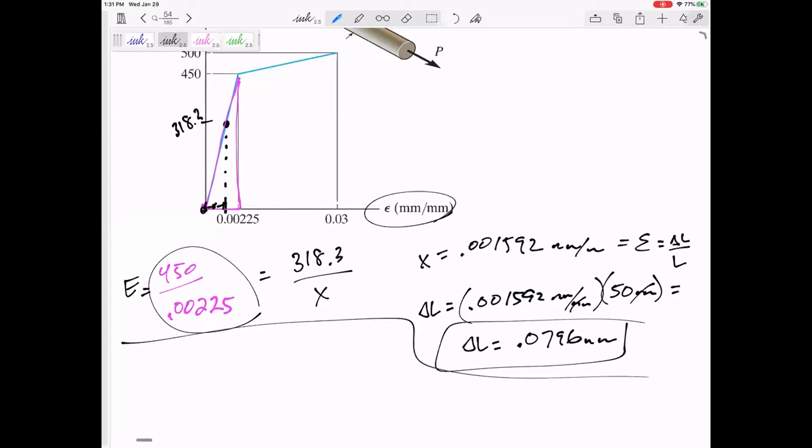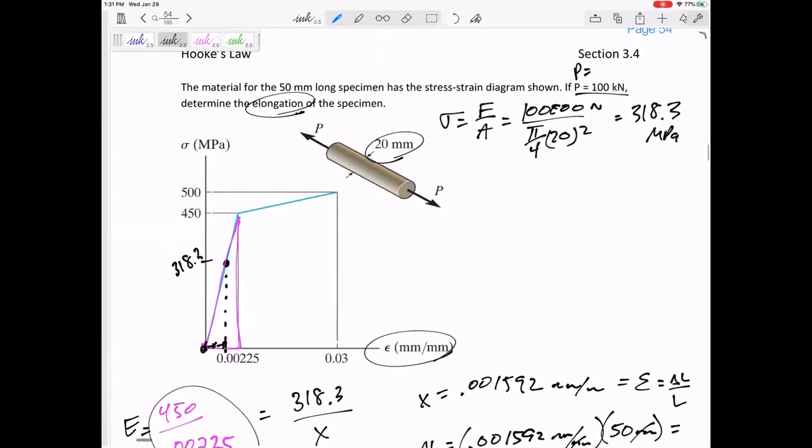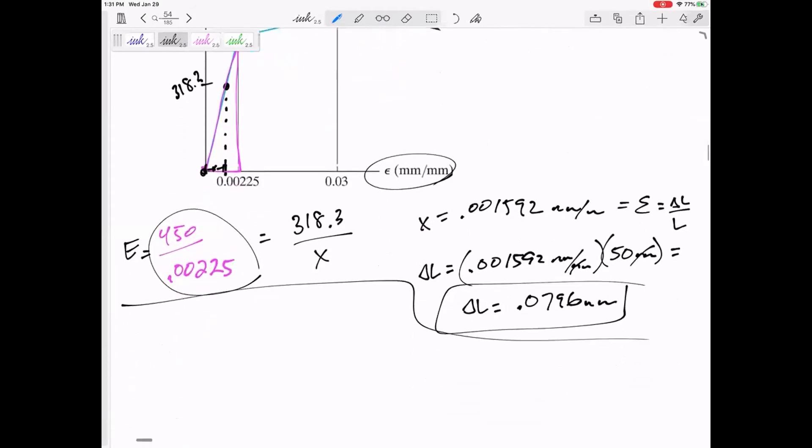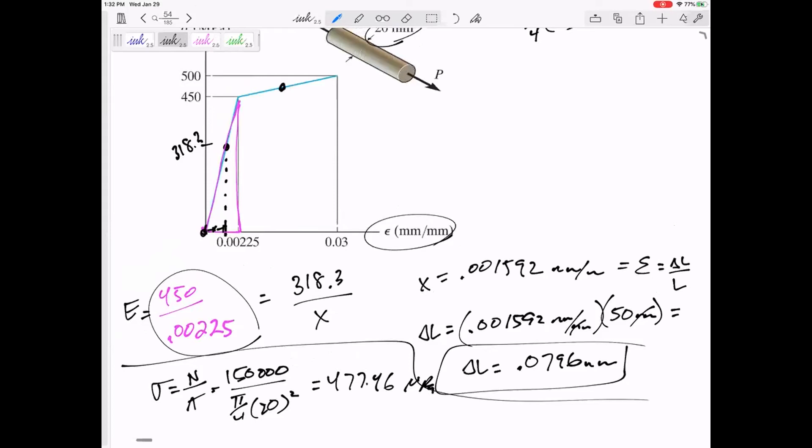Here's another, same problem, same diagram, but what if we had a force of P is equal to 150 kilonewtons? What stress would that cause? 150,000 over pi by 4, 20 squared, 477.46 MPa. So if we had a force of 150, our stress would be somewhere up there out of the elastic region. How can I find, this is 477.46, how can I find that value of strain down there?